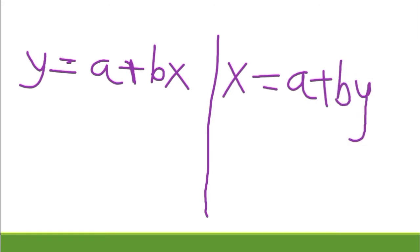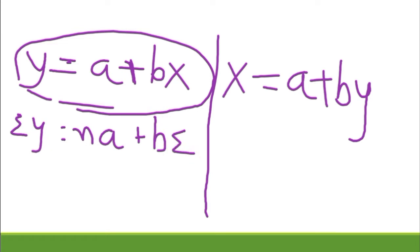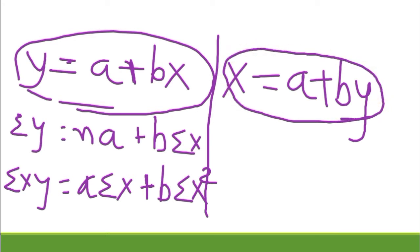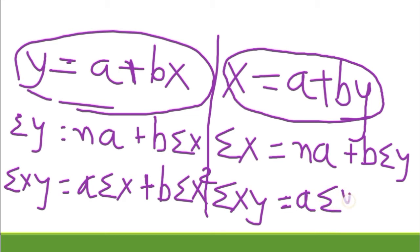The normal equations for y = a + bx are: sigma y = na + b·sigma x, and sigma xy = a·sigma x + b·sigma x². The normal equations for x = a + by are: sigma x = na + b·sigma y, and sigma xy = a·sigma y + b·sigma y².